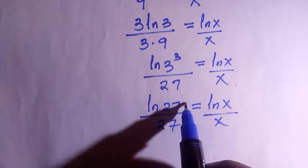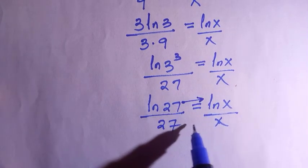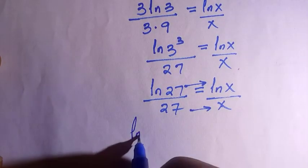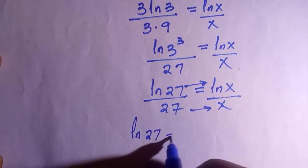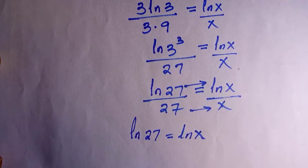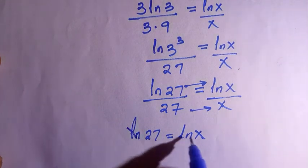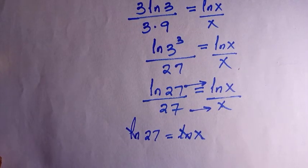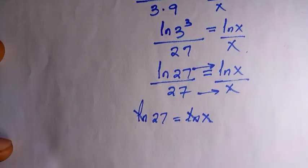There are many ways of doing this. Either we cross multiply or we do normal comparison of numerator and denominator. Either way, we get the answer: ln(27) equals ln(x), or we can just say x equals 27.